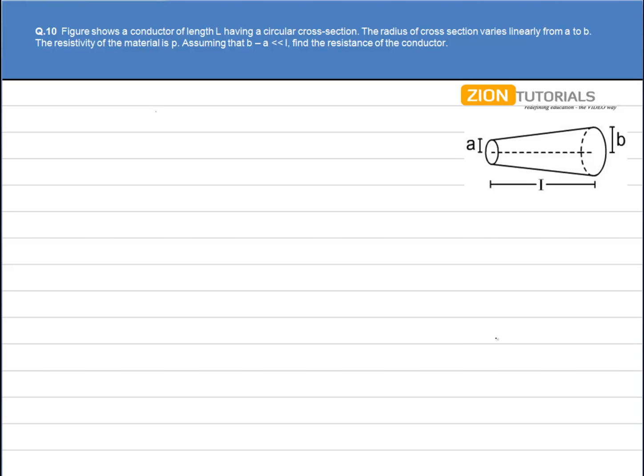The figure shows a conductor of length L having circular cross-section. The radius of cross-section varies linearly from A to B. The resistivity of the material is ρ. We have to calculate the resistance of the conductor.